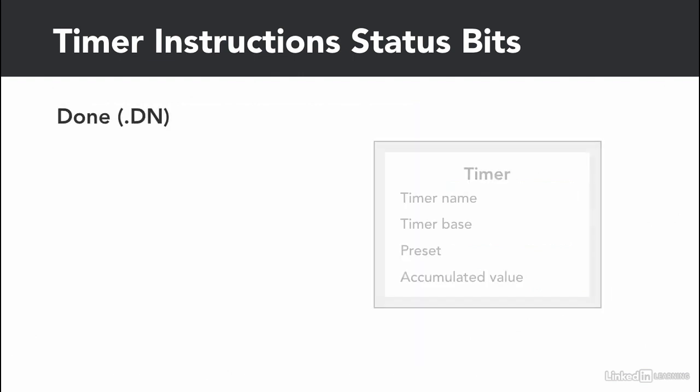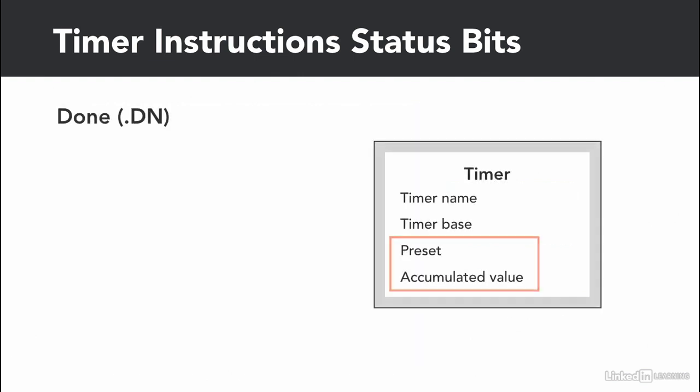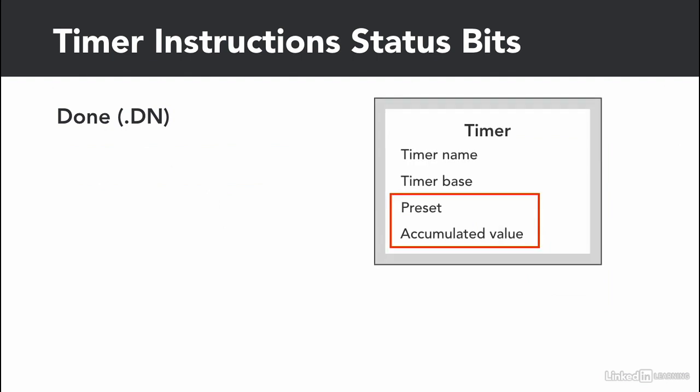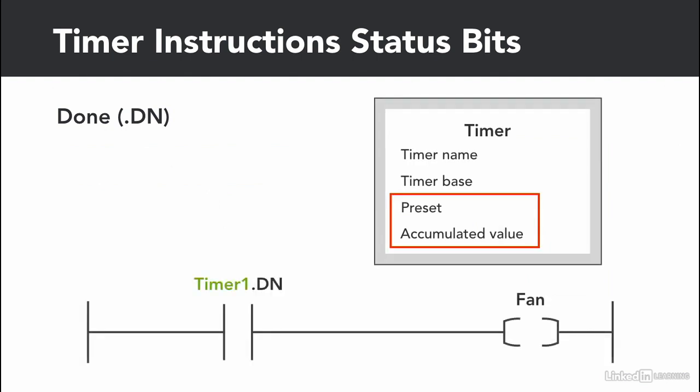A timer done bit is true when the accumulated value is equal to the preset value — basically on when the timer is done timing. It changes from false to true or from true to false depending on the type of timer instruction used, and is commonly used to control another logic when the timer is done timing.